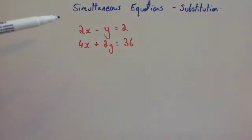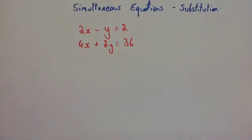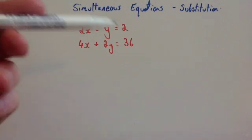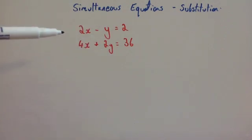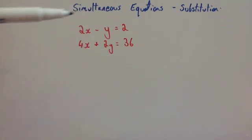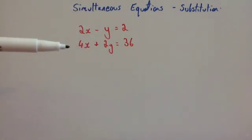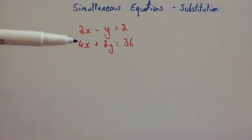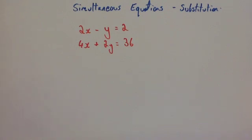In this video we're going to look at simultaneous equations and how to solve them using substitution. Here we've got a pair of equations: 2x minus y equals 2, and 4x plus 2y equals 36. Let's look at how to solve that now.